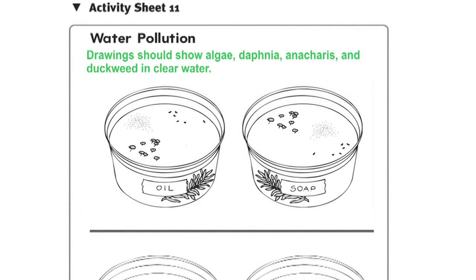To conclude session one, tell students they are going to observe the effect of oil and detergent on the plants and animals in their dishes in session two. Rinse the droppers and wash and rinse the plastic spoons. Return them along with the magnifiers to the kit. Collect Activity Sheet 11 and save it for session two.